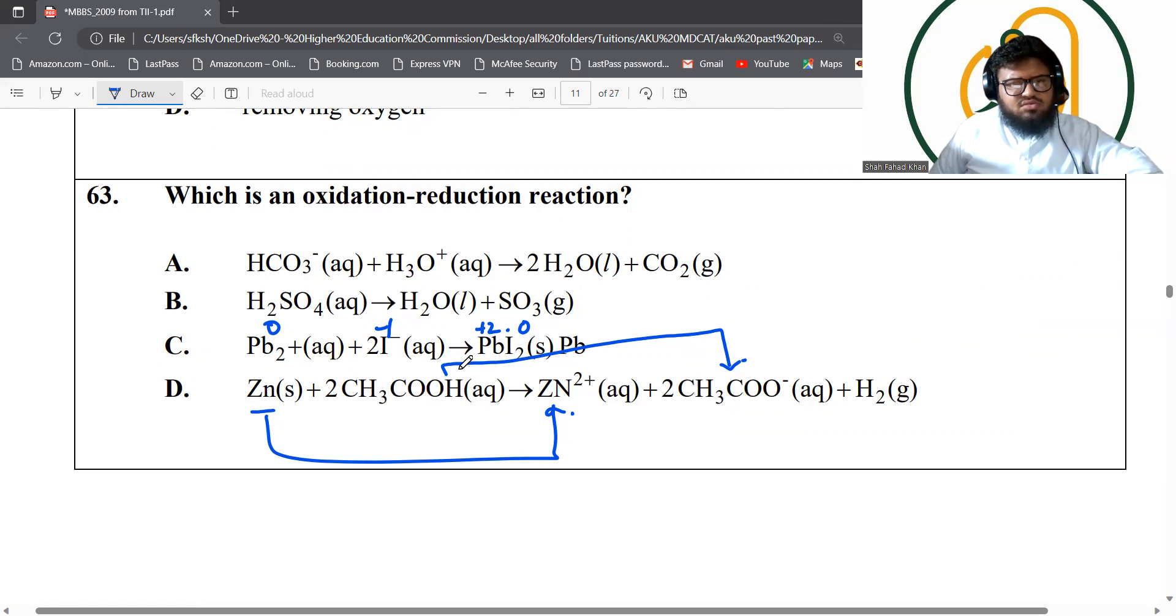And ethanoic acid gives away the hydrogen and gets oxidized. But what about this hydrogen? It goes from plus one. Wait a minute. There's a problem here. This is not zero. This is plus two actually. This two plus is actually the charge. It's just a misprint here. So this one cannot be the answer because lead is not changing its oxidation number at all.